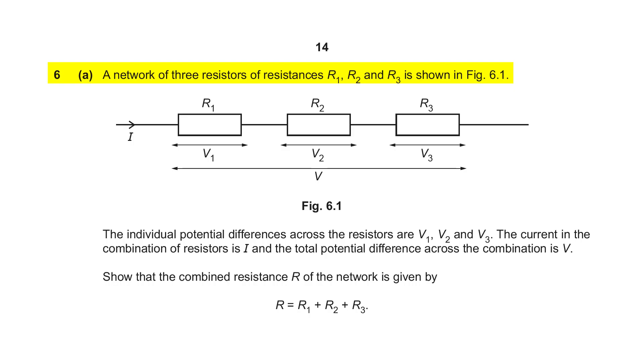Question number 6, Part A. A network of three resistors of resistances R1, R2 and R3 is shown in figure 6.1. The individual potential differences across the resistors are V1, V2 and V3. The current in the combination of resistors is I and the total potential difference across the combination is V. Show that the combined resistance R of the network is given by R equals R1 plus R2 plus R3.